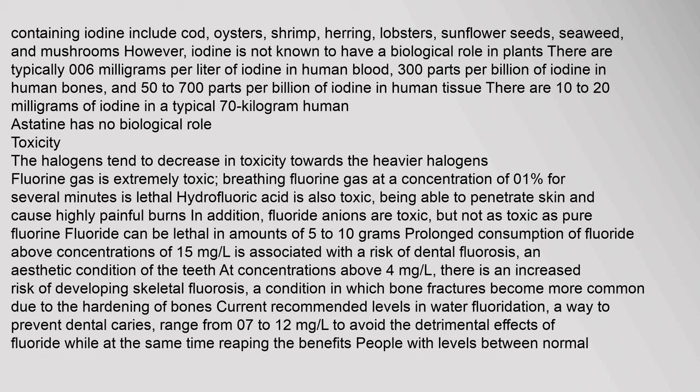There are typically 0.06 mg per liter of iodine in human blood, 300 parts per billion of iodine in human bones, and 50–700 parts per billion of iodine in human tissue. There are 10–20 mg of iodine in a typical 70 kg human. Astatine has no biological role.